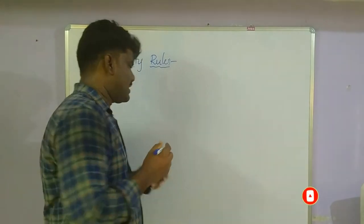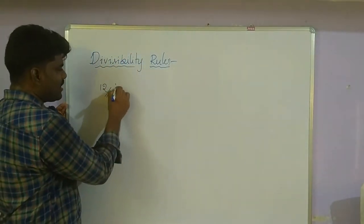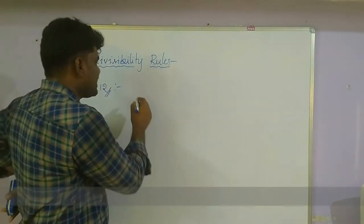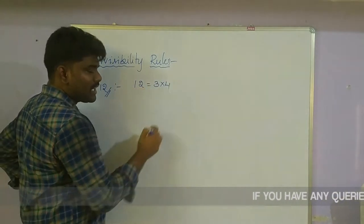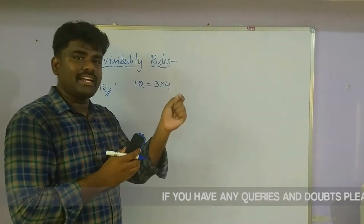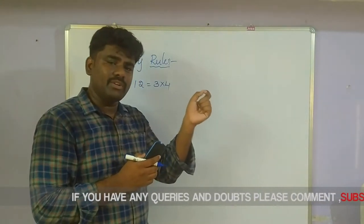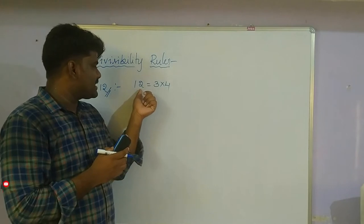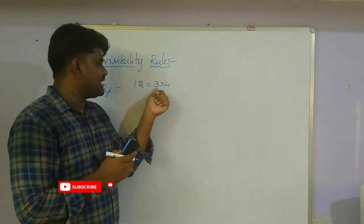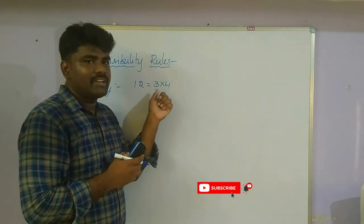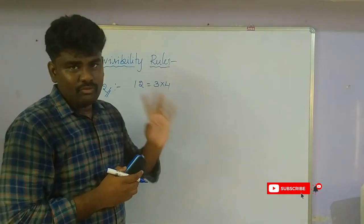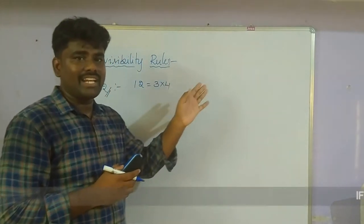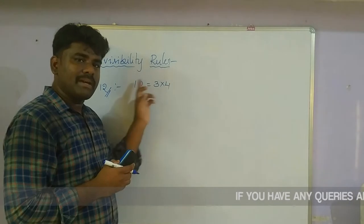Now we are entering into the 12 divisibility rule. 12 can be written as a product of two co-prime numbers: 3 × 4. Just as we check divisibility for 6 by checking divisibility by 2 and 3, to check if a number is divisible by 12, we check if it is divisible by both 3 and 4. You can refer to session 1 for those rules. If the given number is divisible by both 3 and 4, then the entire number is divisible by 12.